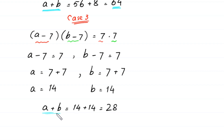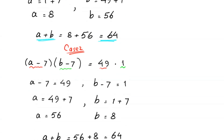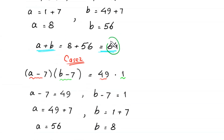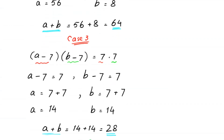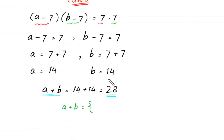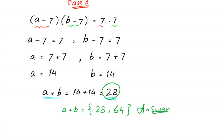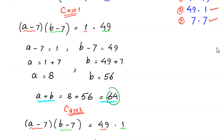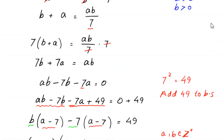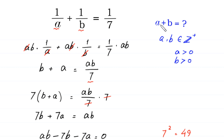So the final set of solutions of a plus b is equal to 64 and 28. The set of a plus b is equal to {28, 64}. These are the final answers: values of a plus b are 28 and 64.